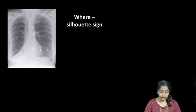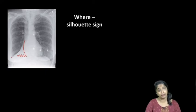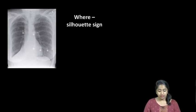Applying the silhouette sign, can you make out the right heart border? Yes, I can make it up. What about the diaphragm? No, I cannot make out the diaphragm. Only the far lateral end of the diaphragm can be made up. So the shadow is merging with the diaphragm, so this is located in the right lower lobe.